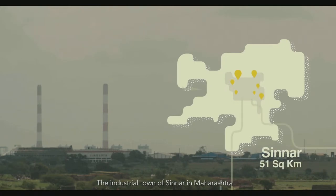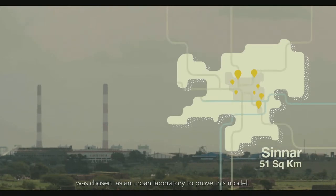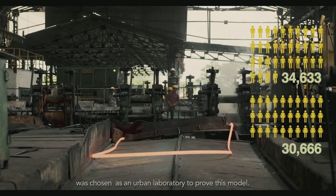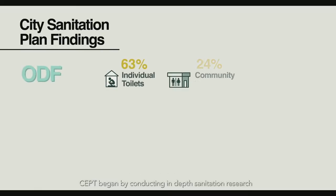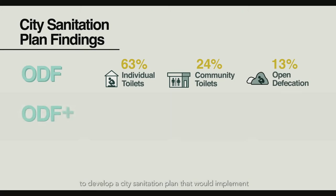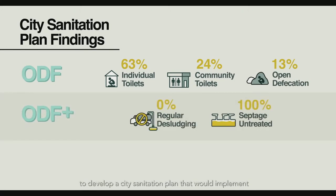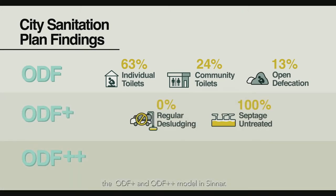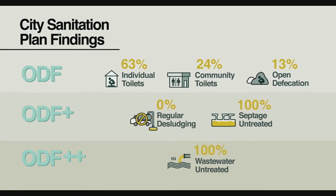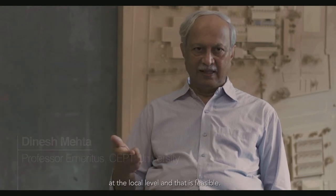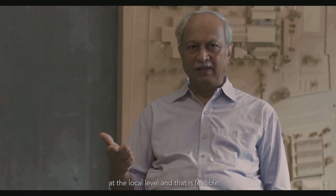The industrial town of Sindar in Maharashtra was chosen as an urban laboratory to prove this model. SEPT began by conducting in-depth sanitation research, preparing a city sanitation plan, getting the local government involved, and developing something affordable and feasible at the local level.